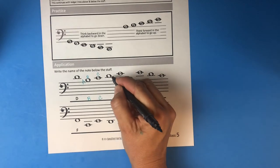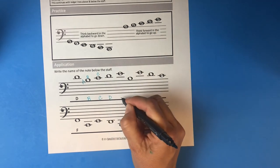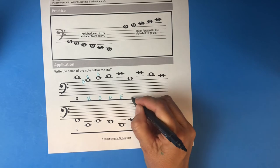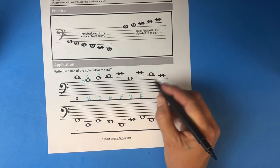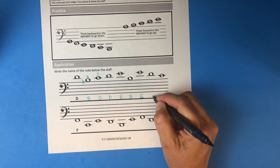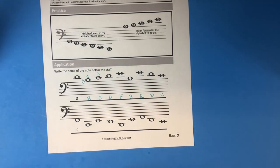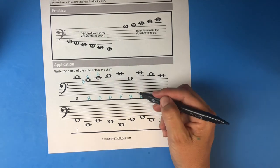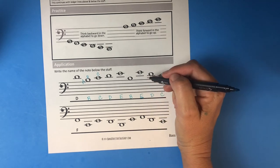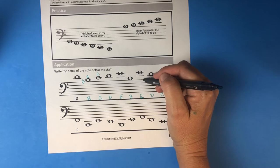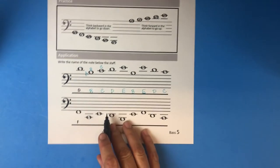Let's check how you did. Going up: that's a D, an E, a B, an E, a D, and a C. You don't have to count up every time — eventually you'll know the note by looking at it. But in the meantime, count up and check your answers.